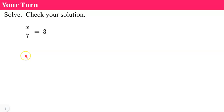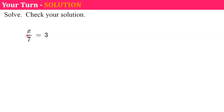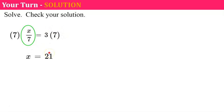Your turn — pause, solve, check your solution, and come back. Welcome back. I first identify that x is being divided by 7. The inverse of divide by 7 is to multiply both sides by 7. That gives me x is equal to 3 times 7, which is 21. We check: replacing x with 21, 21 divided by 7 is 3. It checks.